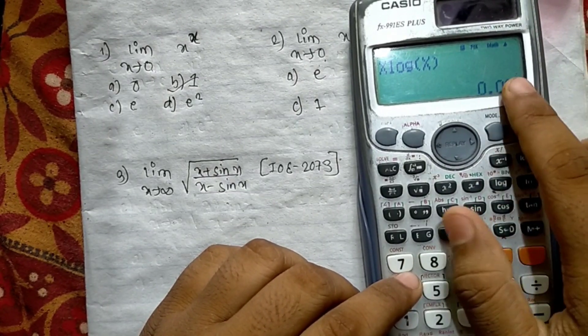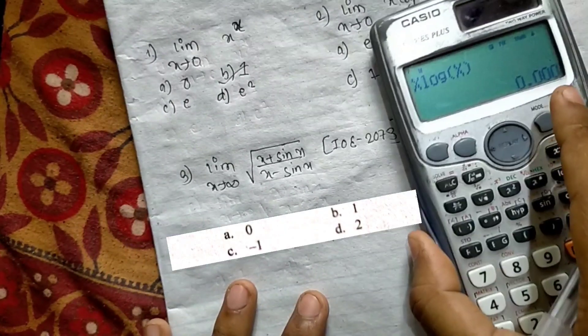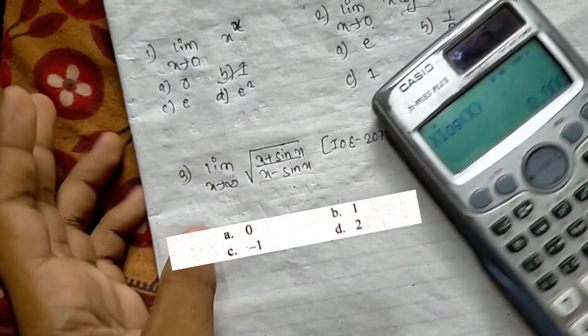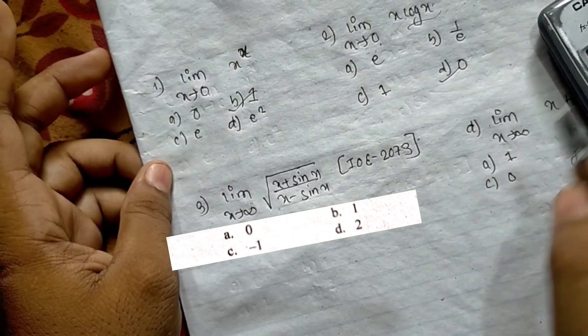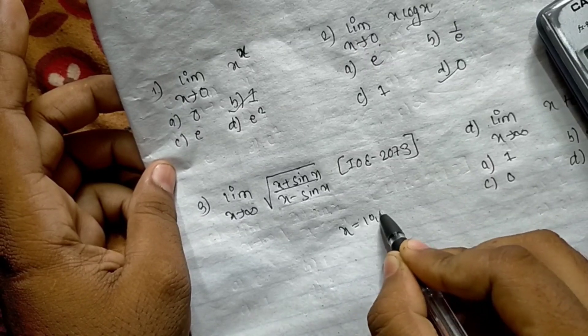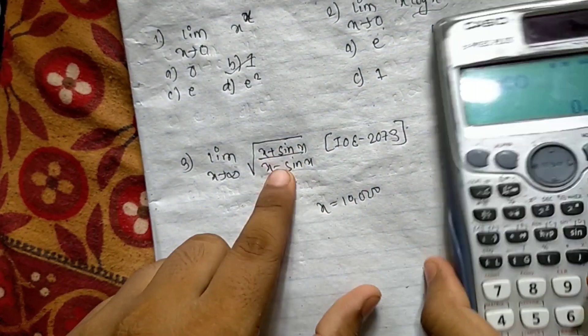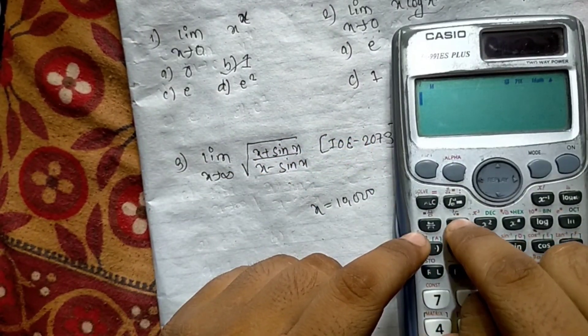X tends to infinity, divide by 1. X tends to infinity means use a large number like 10,000. Put in the calculation to get the answer.